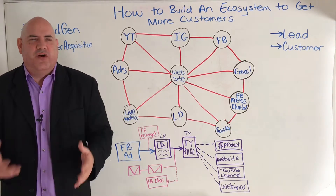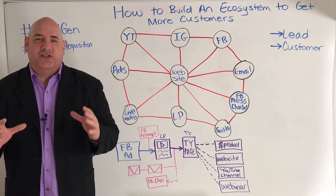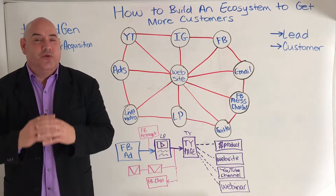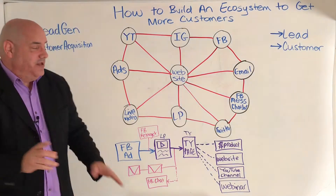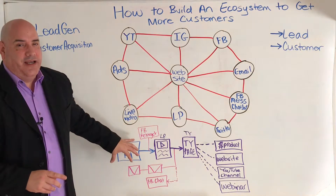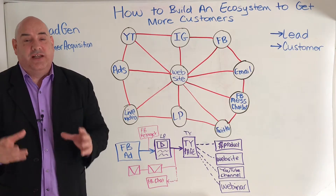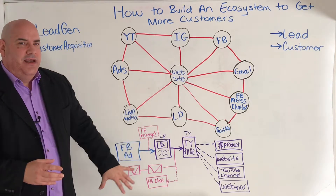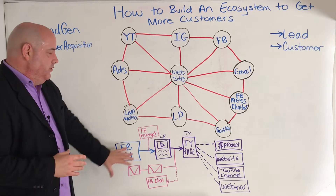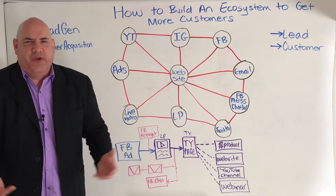First you want them to become a lead, and secondly you eventually want them to become a customer — because after all, this is why we're doing all this marketing. We want leads and we want customers. And you want to make sure that all these platforms you're using work together. Let me give an example: let's say you have a Facebook ad, or you advertise on YouTube or whatever platform you like. That's your ad, and once they click on it, you take them to what's called a landing page.